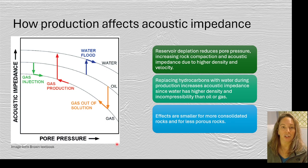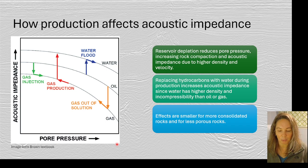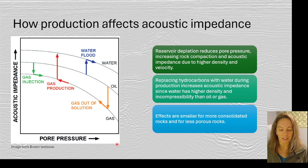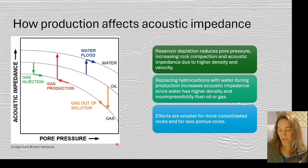When we have different types of production, we want to keep in mind that all of that affects the acoustic impedance. This is a nice summary from the Brown textbook. If you produce oil or gas with water support, you may see the oil move up in the reservoir. If you're water flooding and maintaining pressure support, you may not see a gas cap form, but you could in a depletion drive area. With steam flooding, you can see those changes in acoustic impedance in 4D data, and the same with carbon capture and sequestration.